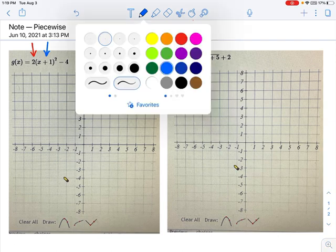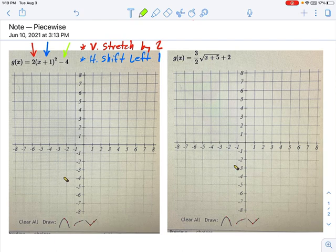And let's pull up one more here. Remember, that right there is a vertical shift down because it's negative, down by four.